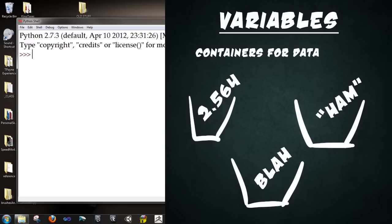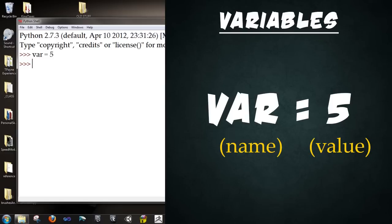So variables are containers for any kind of data. So I want you to type in var equals 5. Enter. Okay. This is your way of assigning a variable. You type in first whatever you want to name it. Then an equal sign. And then the value you wish to store. So if I type var, enter, it outputs 5, the value I have assigned to it. So now that value is bound to that variable.